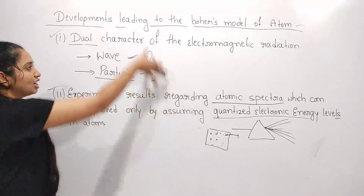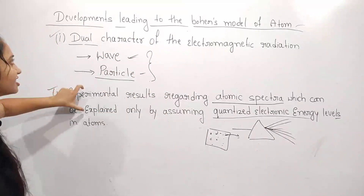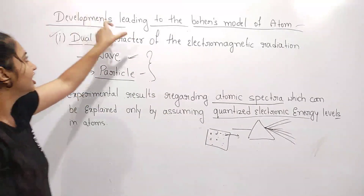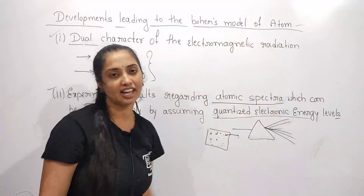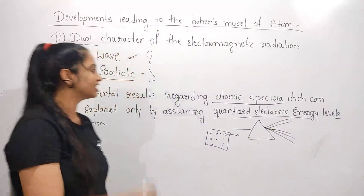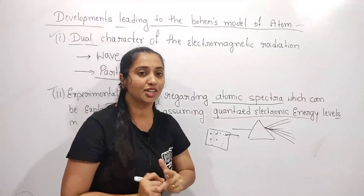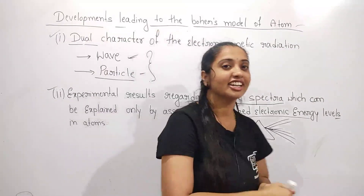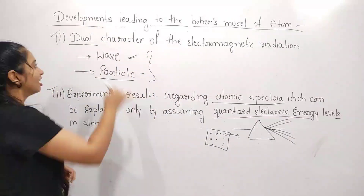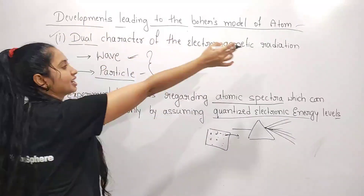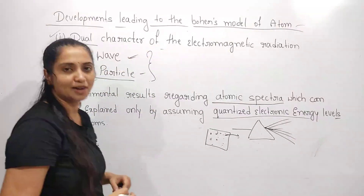By the help of these two facts — the dual character of electromagnetic radiation and the atomic spectra — these two factors lead to the developments of Bohr's model of an atom. In our next class, I wish to discuss the dual character of electromagnetic radiation as a wave and as a particle.